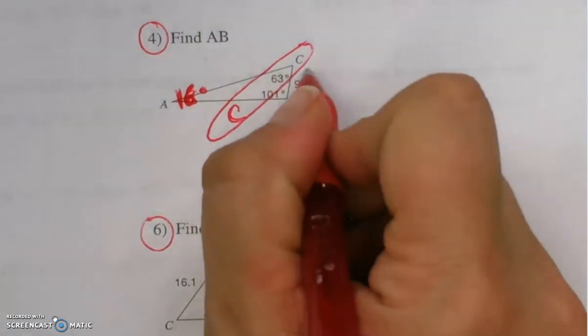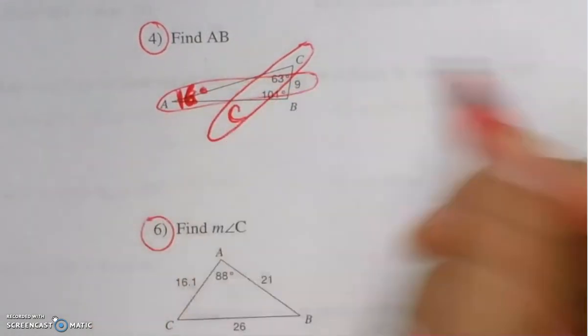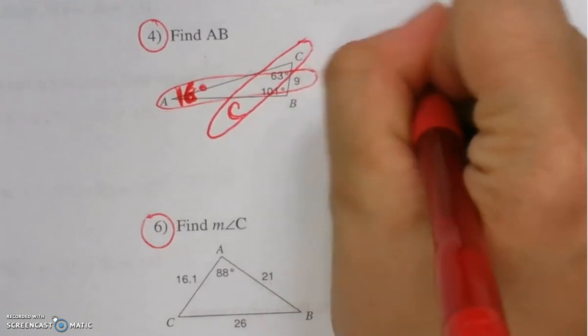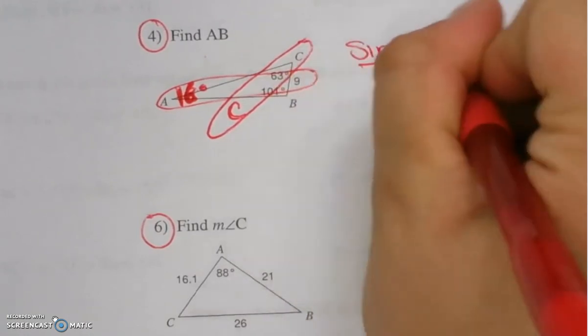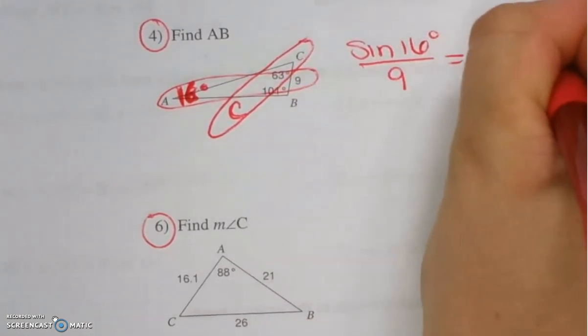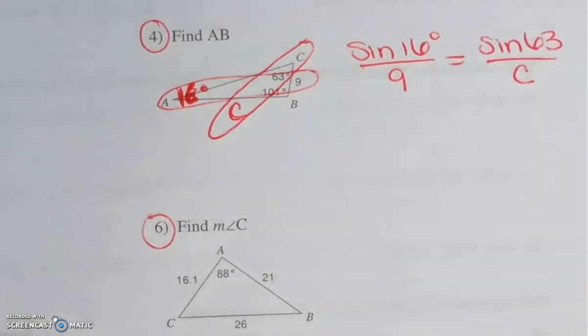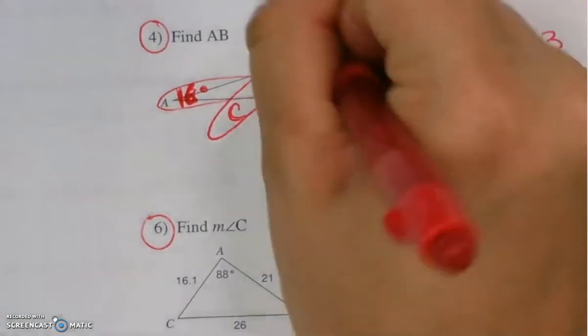So now that we have the 16 degrees, 16 degrees is opposite of side 9. So sine of 16 degrees is to 9 as sine of 63 is to side C. Cross products and solve.